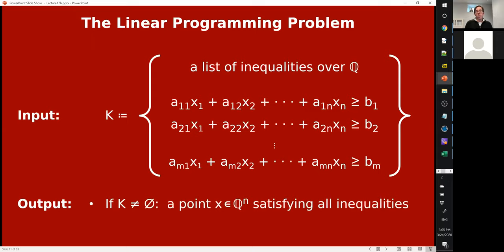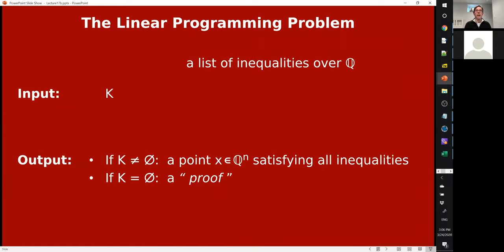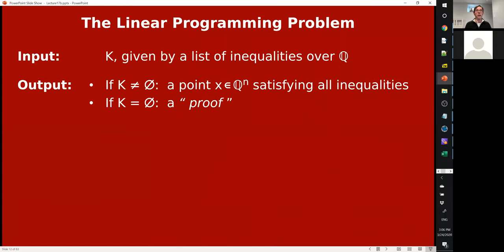You can think of this as a decision problem: given these inequalities, just decide yes or no—is there a solution to all of them? But you might ask for a bit more. For example, if the answer is yes, there's at least one solution, K is not empty, then the natural question is to actually find a point x that satisfies all the inequalities. Interestingly enough, if K is the empty set, you shouldn't ideally just say 'yep, it's empty.' What would be really great out of an algorithm, given such a K, would be to output a proof that there's no solution to these inequalities. In fact, we're going to talk about how that's possible.